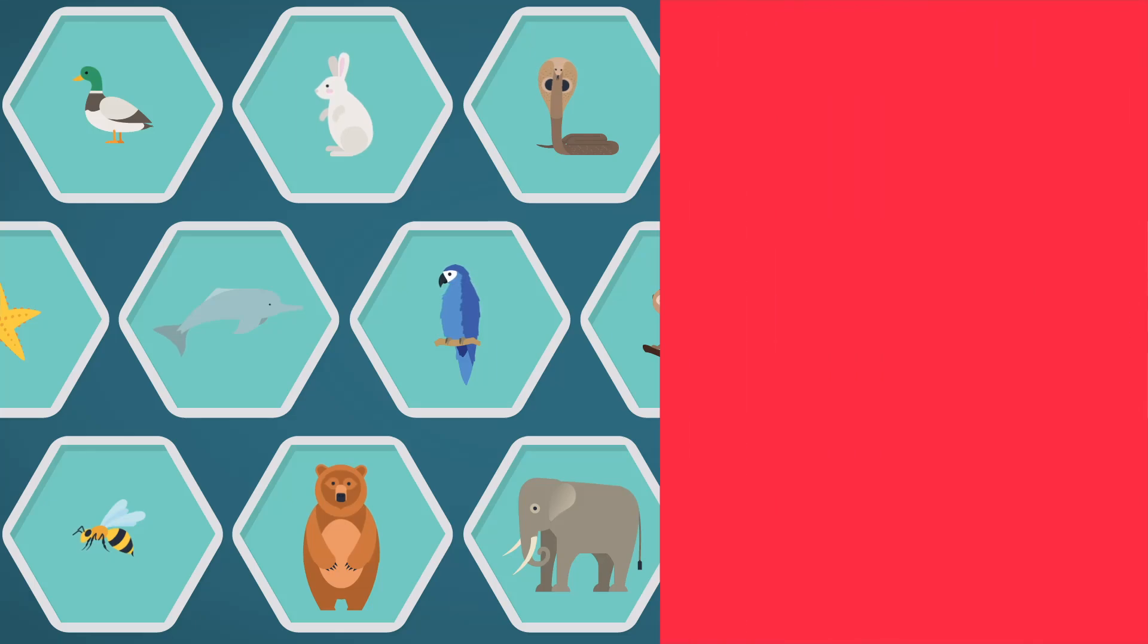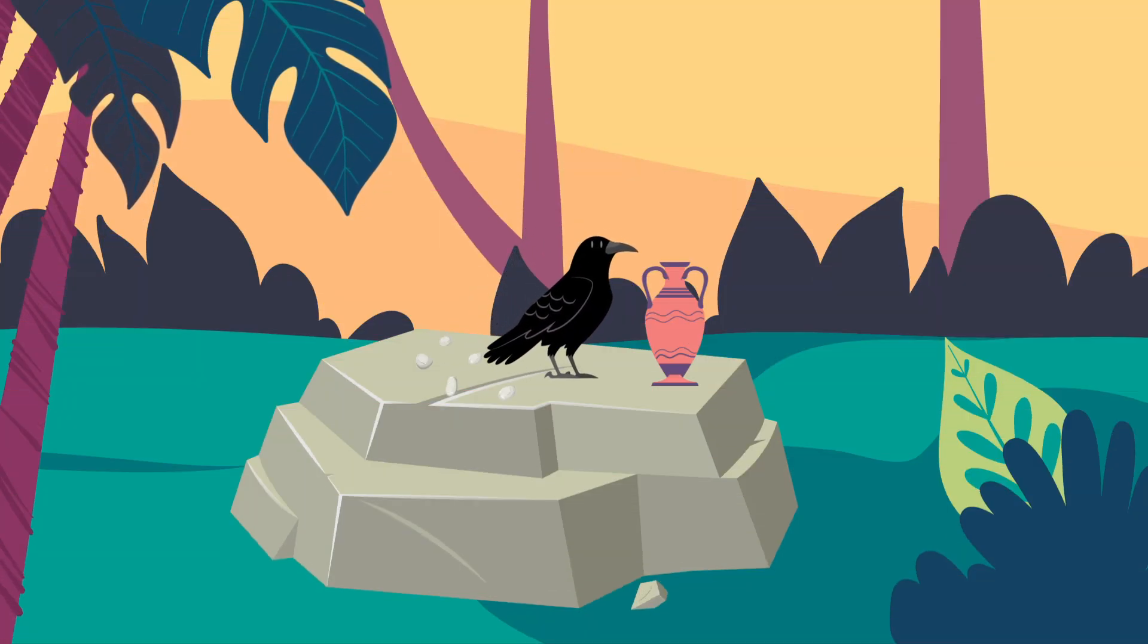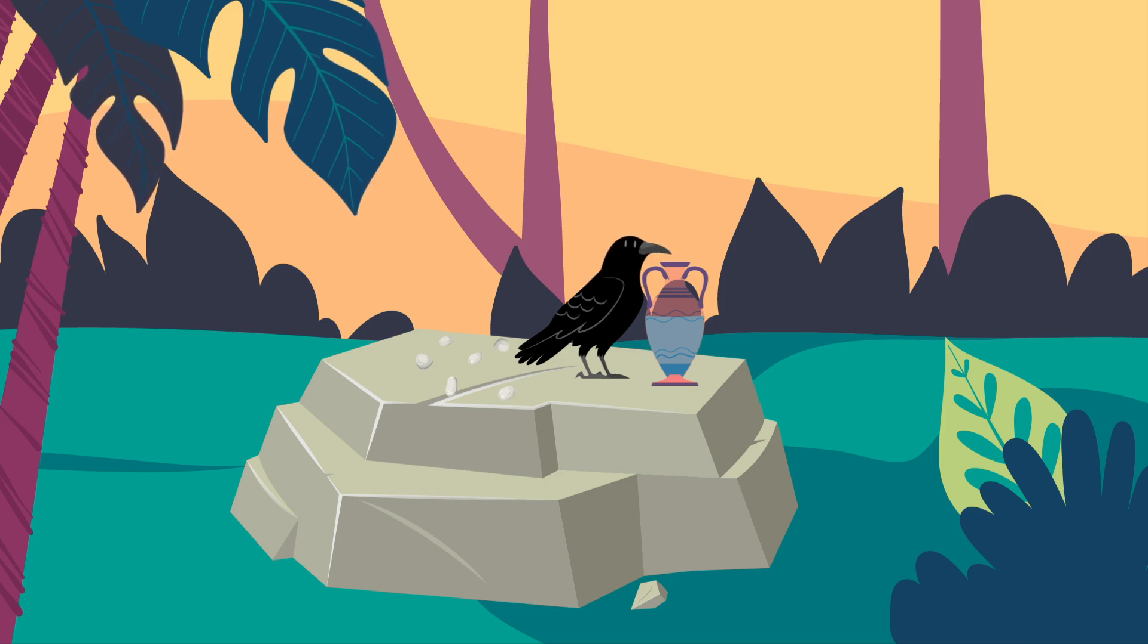The phenomena of animal intelligence has been around for a long time. One particularly famous story is that of the crow and the pitcher, which you may have heard before. The story goes like this. A thirsty crow finds a pitcher with little water that he cannot reach. No matter how many times he tries, he fails.